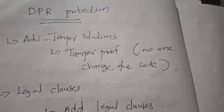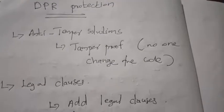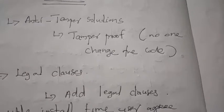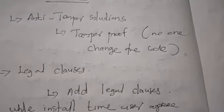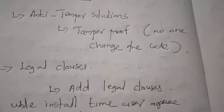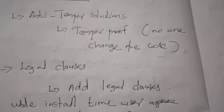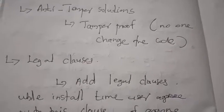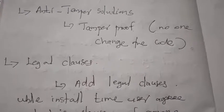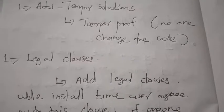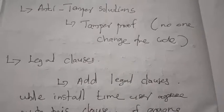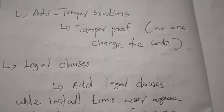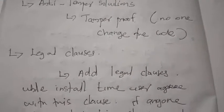The first protection method is anti-tamper solutions. There are many software available for anti-tamper solutions. Anti-tamper means no one can change your data — that is called tamper-proof. Tamper-proof means it is permanent; no one can change the data. By using different types of anti-tamper software, you can make your software tamper-proof.